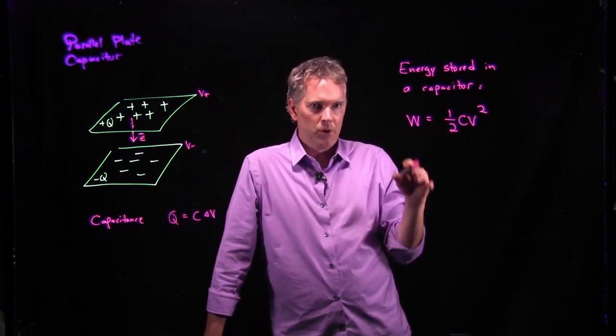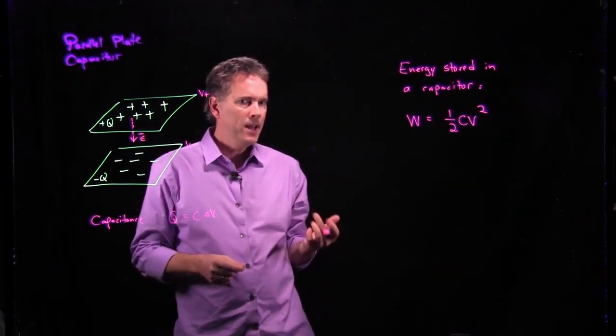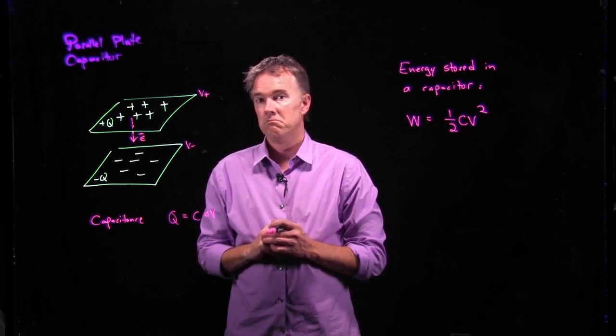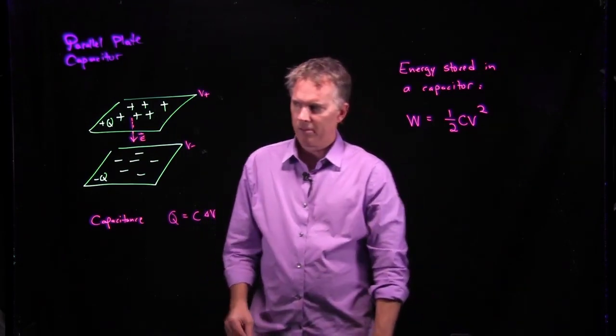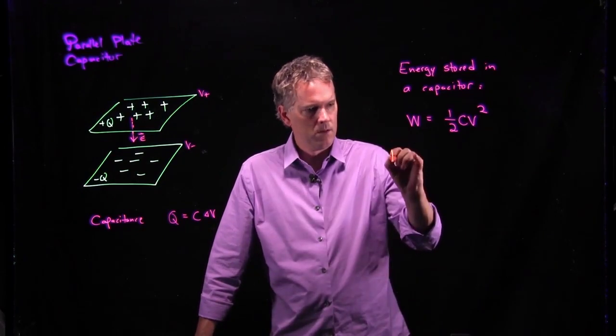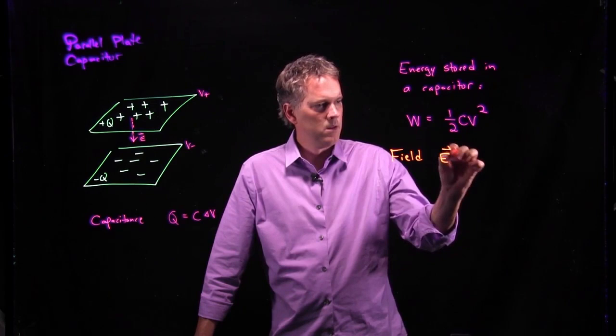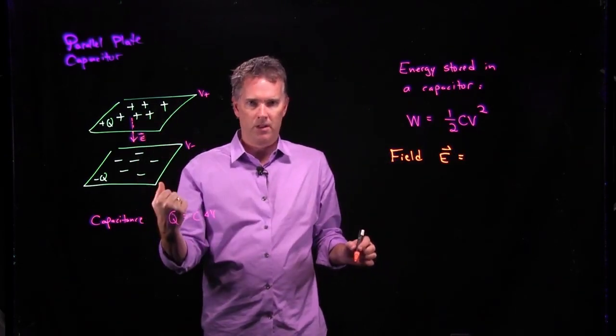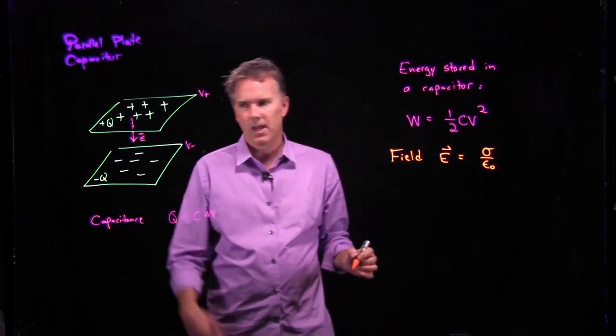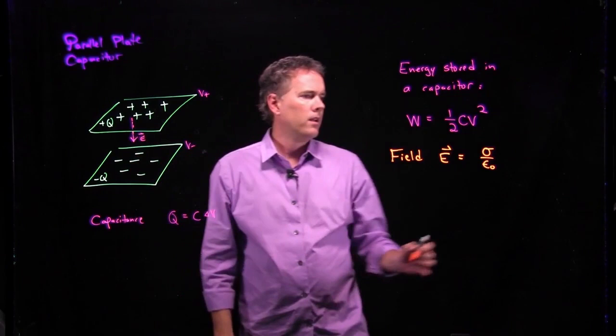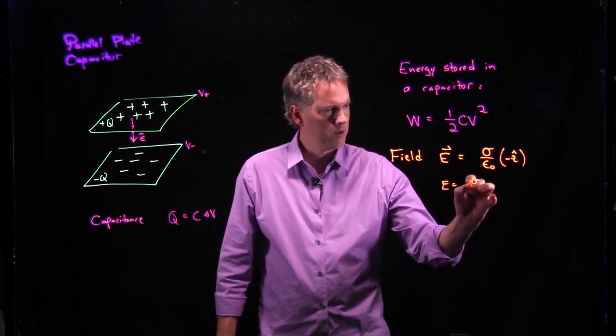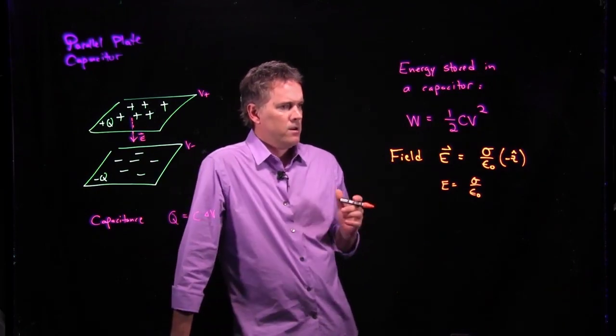Now, if that is the energy stored in the capacitor because I had to do the work to put it in there, can we now say something about the energy in the field that's there? Maybe. Let's think about that for a second. What is the field E inside a capacitor? Each plate gets me sigma over two epsilon knot. So since I have two plates, the field is just sigma over epsilon knot. Don't worry about the fact that it's pointing down or not. That just means we've got to put a minus Z hat on there. But let's just worry about the magnitude of this thing. What's the magnitude? It's sigma over epsilon knot.